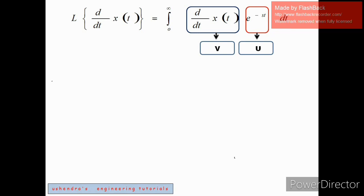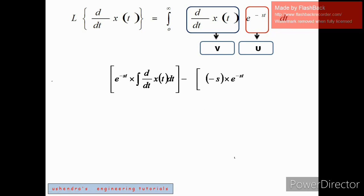According to the UV integration rule, the integral of uv equals the first function u times the integral of the second function v, minus the derivative of the first function times the integral of v. Here u is d/dt of x(t) and v is e^(-st). The integral of e^(-st) gives e^(-st), and the derivative of the first function d/dt of x(t) gives minus s times e^(-st).